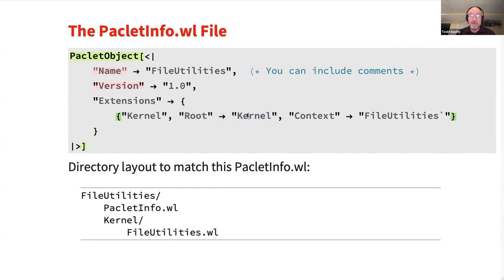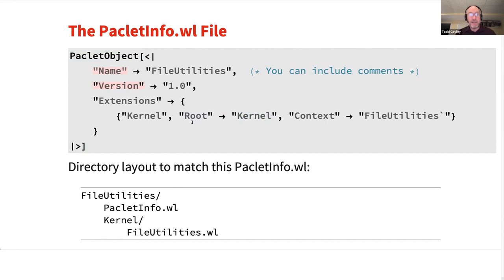If this had said root arrow foo, then this directory would have needed to be called foo. It's very simple: if I have a file utilities.wl file and I want to make a PACLIT out of it, I just put it in a kernel subdirectory, I create a PACLIT info file like this, throw it alongside, and now I've got a PACLIT.